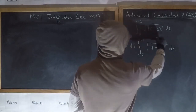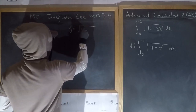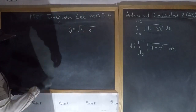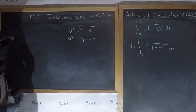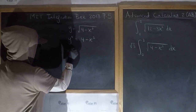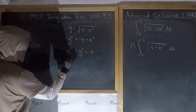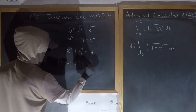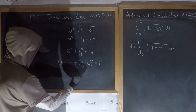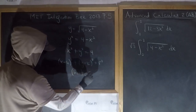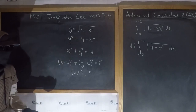Now, if we let y equal the square root of four minus x squared, and square both sides, we get y squared equals four minus x squared. Adding x squared to both sides gives x squared plus y squared equals four. This is in the form x minus h squared plus y minus k squared equals r squared, the equation of a circle centered at (h, k) with radius r.